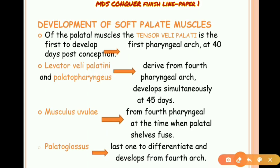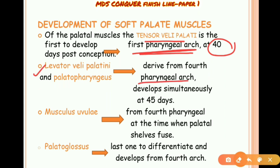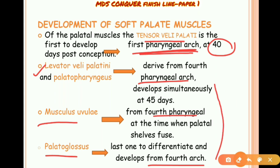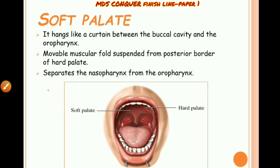The muscles of the soft palate: tensor veli palatini is the first to develop, from the first pharyngeal arch at 40 days of conception. Levator veli palatini and palatopharyngeus are derived from the fourth pharyngeal arch. Musculus uvulae develops from the fourth pharyngeal arch, and palatoglossus also develops from the fourth arch.